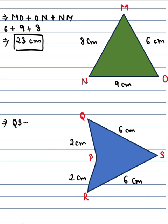QS plus SR plus PR plus PQ. QS is 6 cm, SR is 6 cm, RP is 2 cm, and PQ is 2 cm.